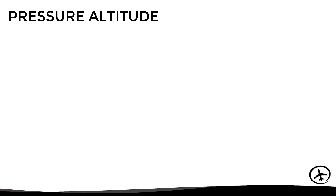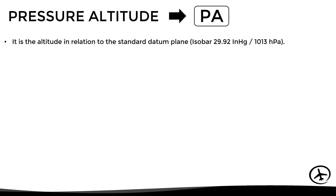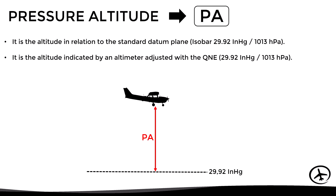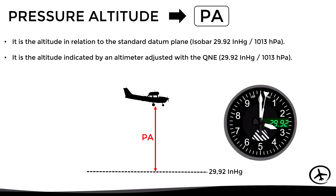Pressure altitude is abbreviated as PA and corresponds to the altitude of the aircraft in relation to the standard isobar of 29.92 inches of mercury or 1013 hectopascals, which corresponds to the pressure at sea level under standard conditions. Therefore we can also say that pressure altitude is the altitude indicated by an altimeter adjusted with the QNE, since in this case the altimeter would be measuring the altitude in relation to the standard isobar.